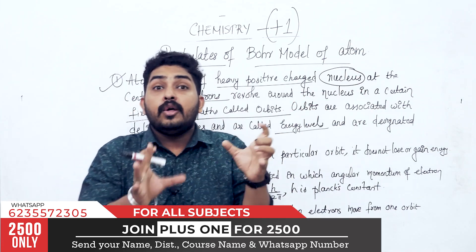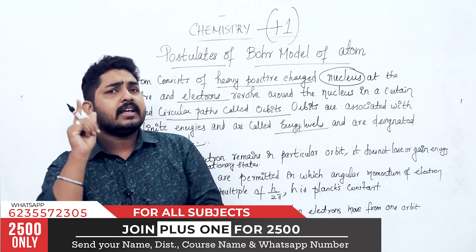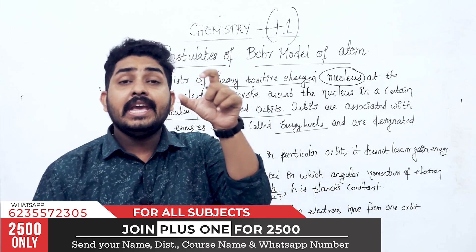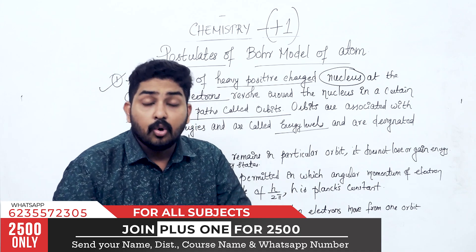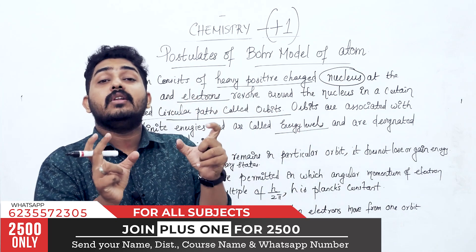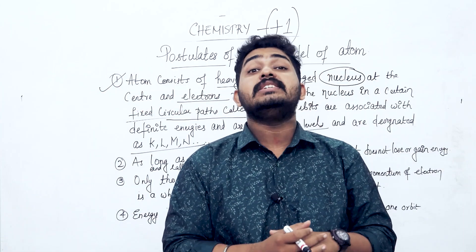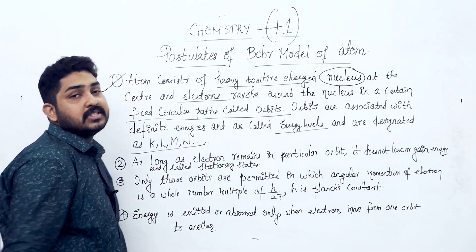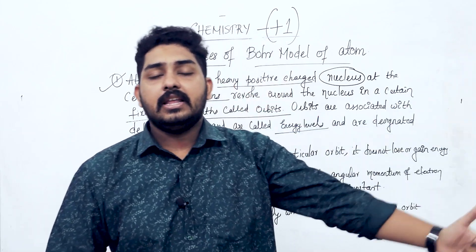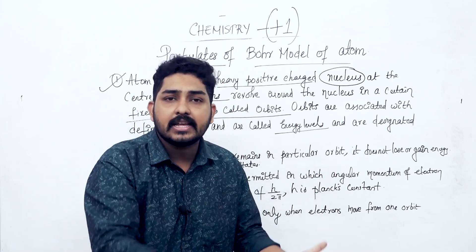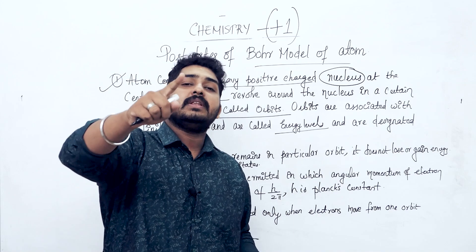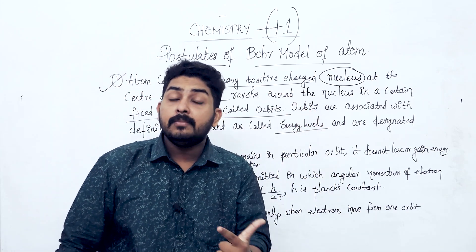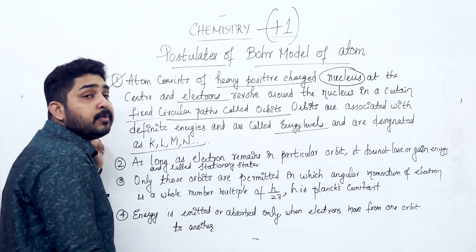The circular path is called an orbit. Each orbit is associated with a particular amount of energy, so they are also called energy levels. We designate these energy levels using K-shell, L-shell, M-shell, and N-shell. The first orbit is K-shell, the second is L-shell, and the third is M-shell. This is the first postulate.